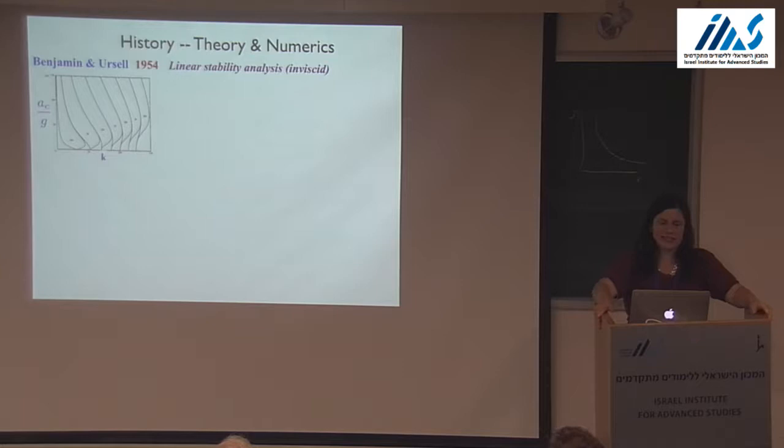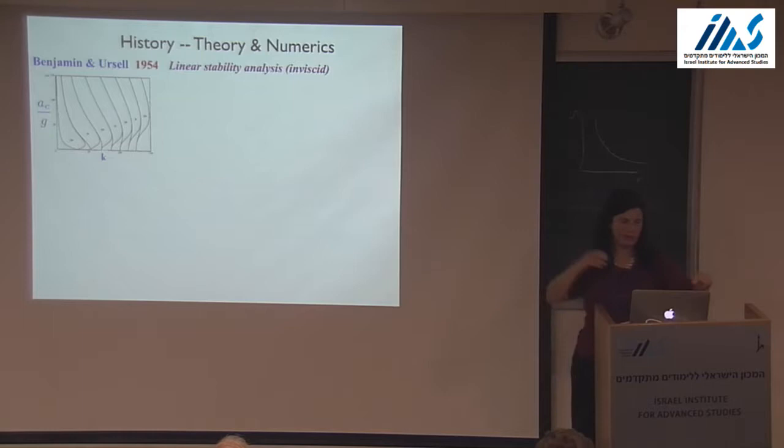This K axis is the wave number of the pattern — the spatial wave number — and AC over G is the amplitude of the shaking, which only occurs above a critical value.